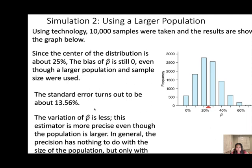The standard error turns out to be about 13.5%. So the variation of the sample proportion is less, and this estimator is more precise. Even though the population is larger, in general the precision has nothing to do with the size of the population — only with the size of the sample. This means if we increase the sample size, the estimator is more precise. So we want a larger sample size to make it more precise.